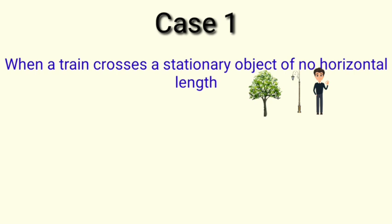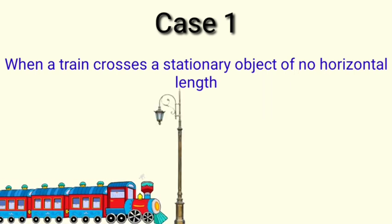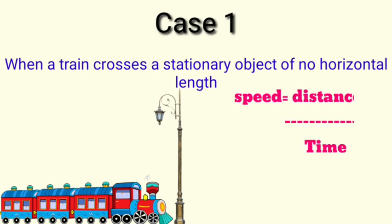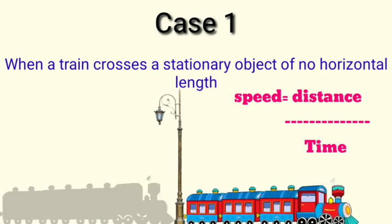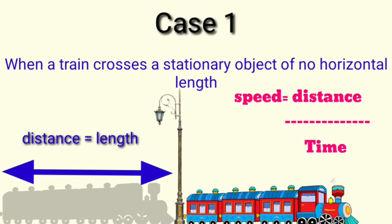Let's first understand the scenario. Suppose there is a train which has to cross a pole. Our formula is speed is equal to distance upon time. Here you can see the train is moving and it is about to pass the pole. The train is said to have crossed the lamp when the back side of the train has crossed it. As shown by the transparent image, the distance covered by the train is the length of the train itself. Therefore, the formula becomes: speed is equal to length of the train upon time.